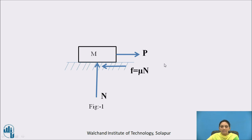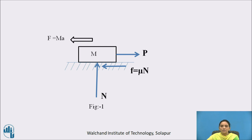D'Alembert says that whenever a body is in a dynamic condition, it is easy to analyze by simply adding one more force acting in exactly the reverse direction of the resultant force. That force is called M·A, or the inertia force — mass of the body times acceleration.